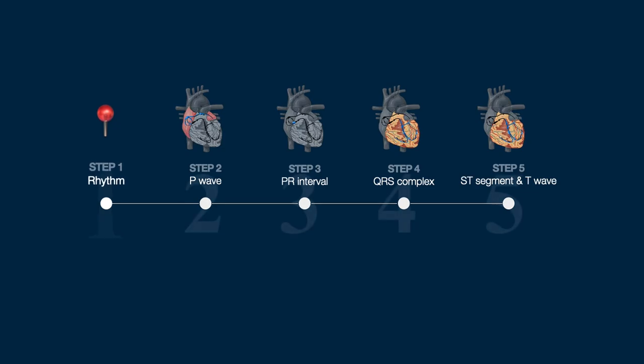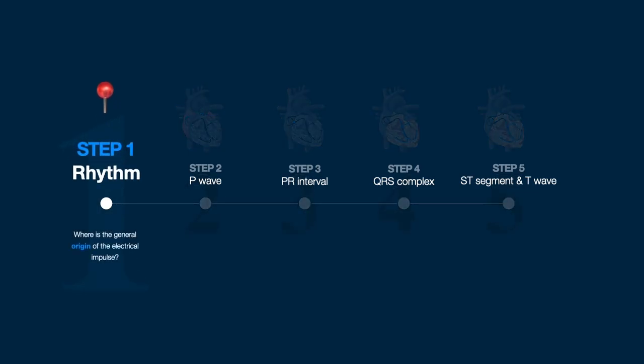Step 1: Analyze the rhythm. The first step is to determine the general location of the cardiac pacemaker — above or within the ventricles — and to describe the key characteristics of the cardiac pacing, which includes rate (fast or slow) and regularity (regular or irregular).